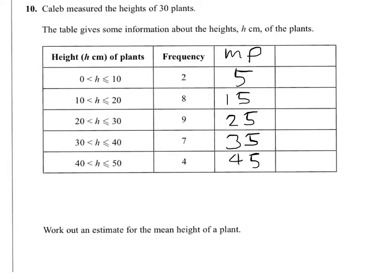Now we have to make an estimate of the total height of the plants in each interval. So our first estimate will be 2 5s are 10. So this is our total column, if you like. That's what we think the total height of the plants is in each interval. 8 15s, 120, and so on. So I've filled those in for you.